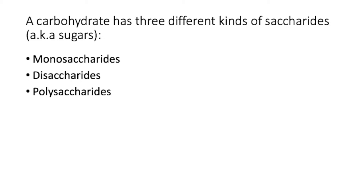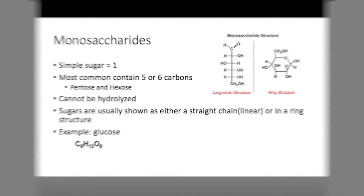A carbohydrate has three different kinds of saccharides, also known as sugars: monosaccharides, disaccharides, and polysaccharides.